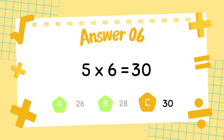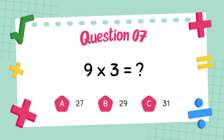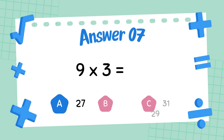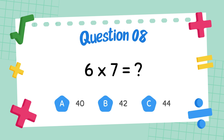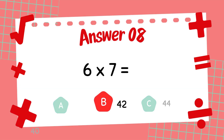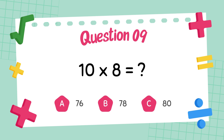The answer is 30. What is 9 times 3? The answer is 27. What is 6 times 7? The answer is 42. What is 10 times 8?